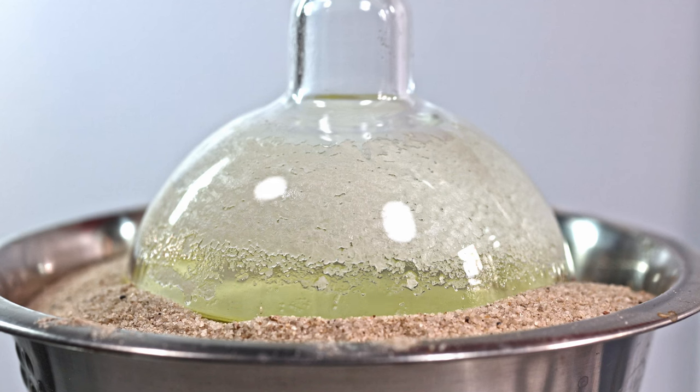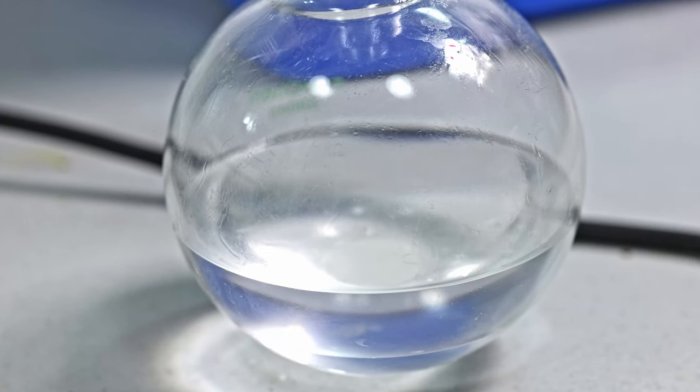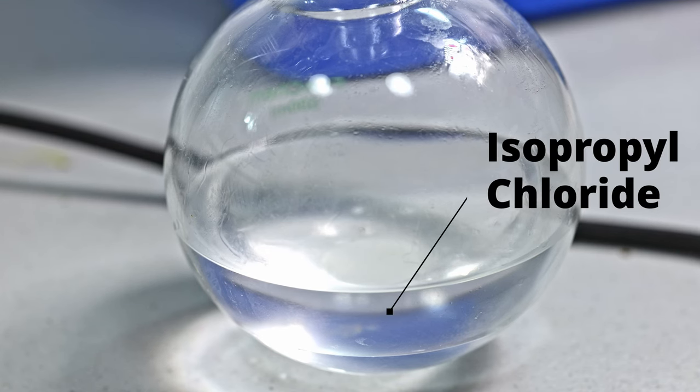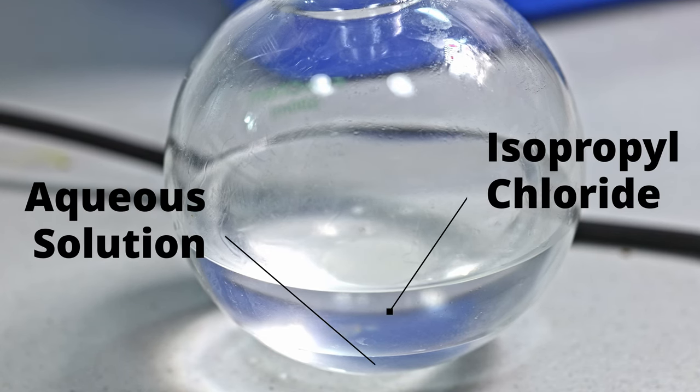Also our reaction flask has been boiling less because we've already expelled a lot of the isopropyl alcohol and turned it into isopropyl chloride, but I still believe there's more left in there. In our collecting flask we have two distinct layers. I suspect that the top one is isopropyl chloride and the bottom one is a mixture of water, unreacted alcohol, and some muriatic acid.